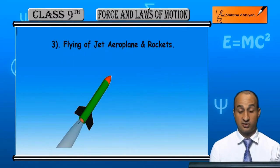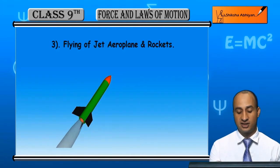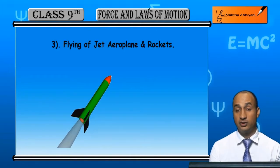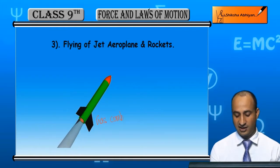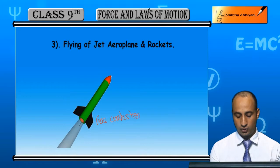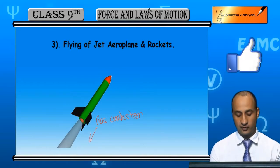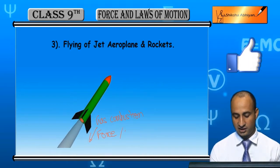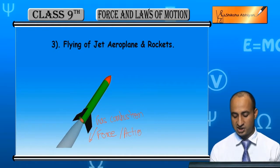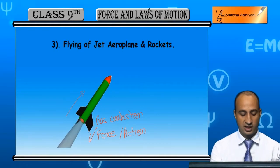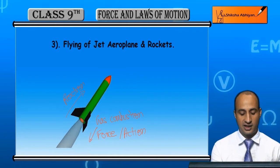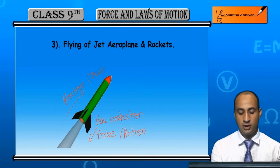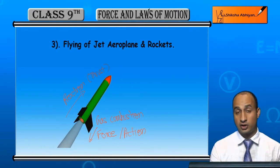Now students, ek aur example se samajhte hain ki flying jet aur airplane kis taraf se hote hain. Aap dekh rahe hain: yeh force lagaati hai — action karti hai — toh uske reaction ke liye upar ki taraf reaction hota hai. Aur yeh reaction thrust provide karaata hai, jo rocket ya airplane ko aage ki taraf move karaane mein help karta hai.